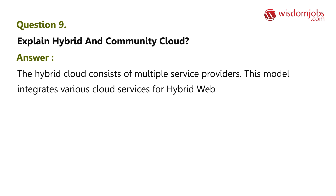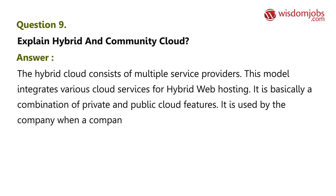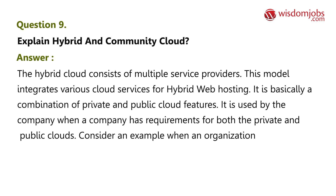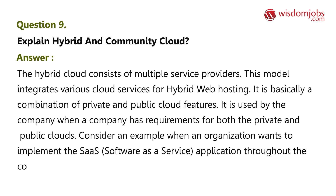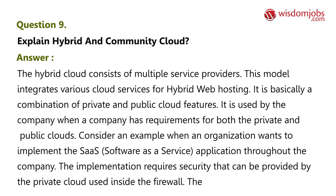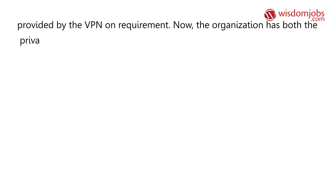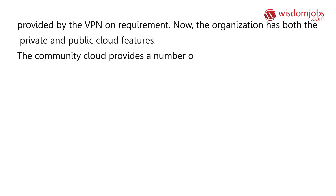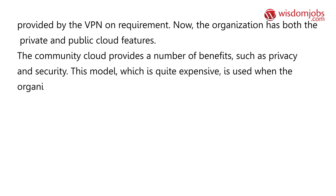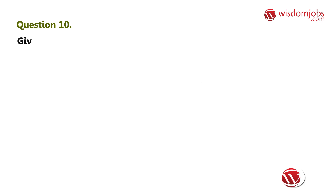Question 9: Explain hybrid and community cloud. Answer: The hybrid cloud consists of multiple service providers and integrates various cloud services for hybrid web hosting. It is a combination of private and public cloud features, used when a company has requirements for both. For example, when an organization implements a SaaS application, security can be provided by the private cloud inside the firewall, with additional security via VPN. The community cloud offers privacy and security benefits and is used when organizations with common goals share cloud service benefits.